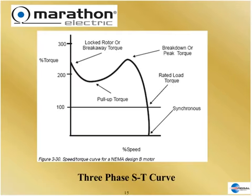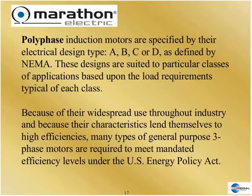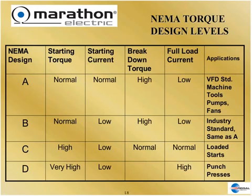The shape of the curve changes depending on whether we have Design A, B, C, or D. They're widespread through the industry, and efficiencies are usually mandated, unlike single-phase motors. The absolute standard is Design B — those are general-purpose motors found in most applications. A, C, and D are special; they differ because of the shape of their speed-torque curve profiles and the machines that use them.